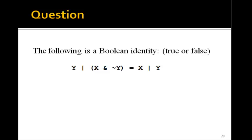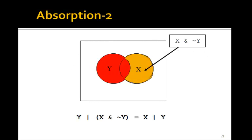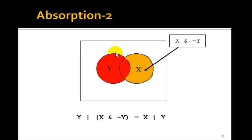Here's a question — is this a Boolean identity? The way to check these is with a Venn diagram. This is actually one of our absorption theorems, so it's true. The x's and y's may be relabeled, so don't memorize by position. Looking at x AND NOT y as the gold area and y as the red, adding them together gives x OR y.